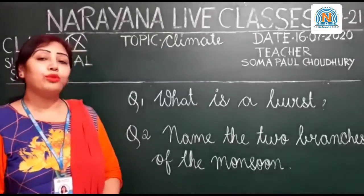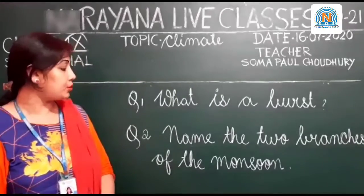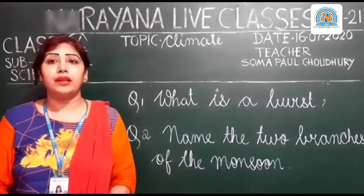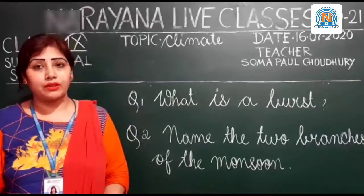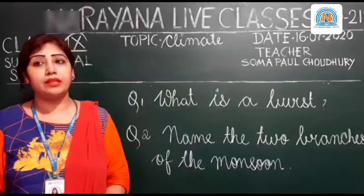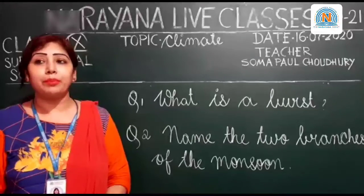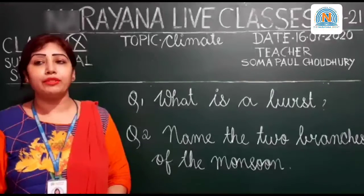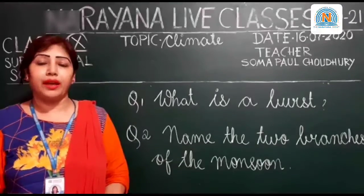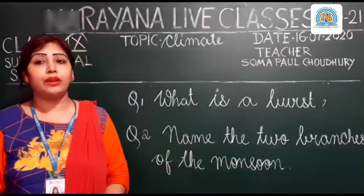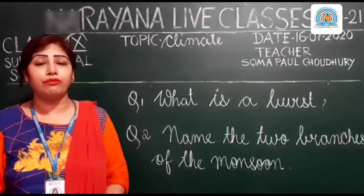Let's move on to question number two. Name the two branches of the monsoon. The southwestern monsoons arrive in two branches: the first, the Arabian Sea branch, and the second, the Bay of Bengal branch. The Arabian Sea branch reaches Mumbai approximately on the 10th of June, and the Bay of Bengal branch also advances rapidly and arrives in Assam in the first week of June.